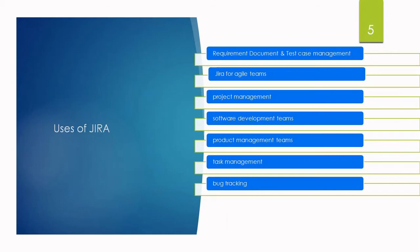They can upload it user story-wise or project-wise so that anyone can see it. From the testing team's perspective, the testing team can upload test cases which will be shared with every stakeholder. Whoever wants to view the content of test cases can see it from the single repository. So Jira for agile teams provides a centralized place for all teams.